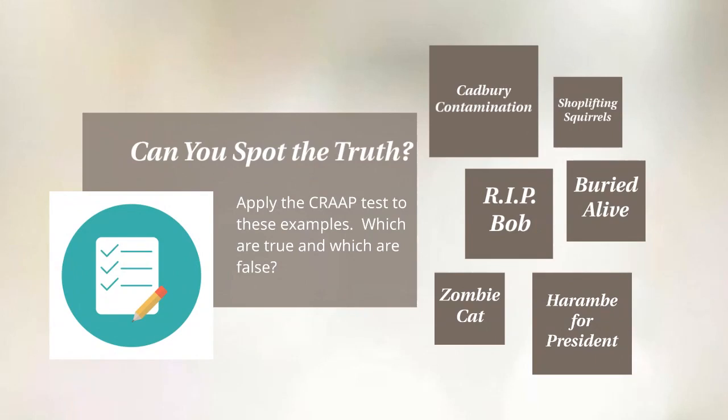In part one, we were talking about the CRAP test. To review, the C stands for currency, the R stands for relevance, the A's stand for accuracy and authority, not necessarily in that order, and the P stands for purpose. What we're going to do now is look at a couple of examples and apply the CRAP test to see whether or not we can determine if something is truth or a lie.